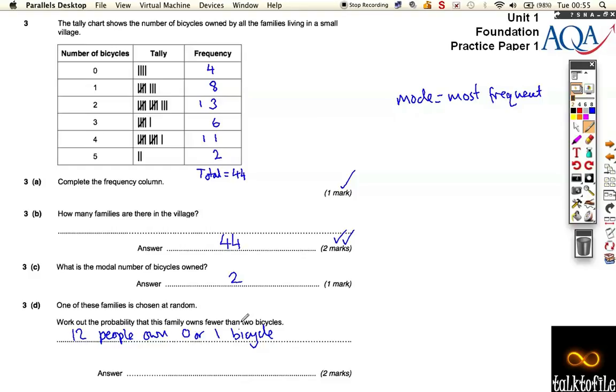Less than 2 means 0 and 1, but not 2 itself. So we need to add up this column, I mean this row and this row, so we need to add up these two, so there's 12,